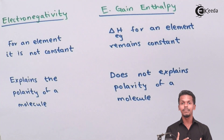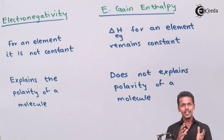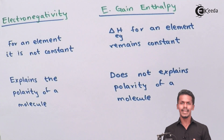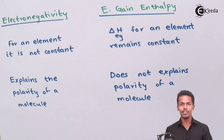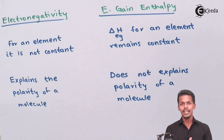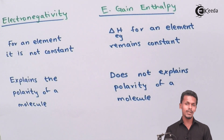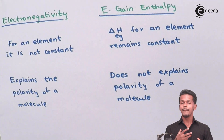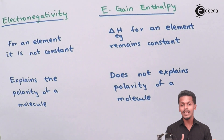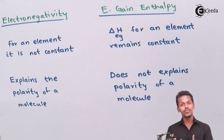The final key difference is polarity. Electronegativity explains the polarity of a molecule, while electron gain enthalpy does not. Polarity is the difference between positive and negative charge in a compound — for example, in HCl, hydrogen has a partially positive charge while the chlorine atom has a partially negative charge. This charge difference gives rise to polarity, and a higher electronegativity atom creates greater polarity.